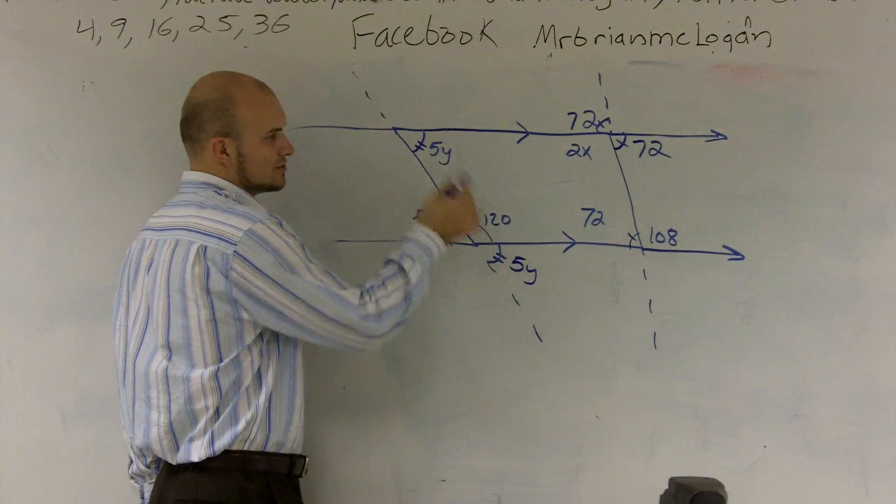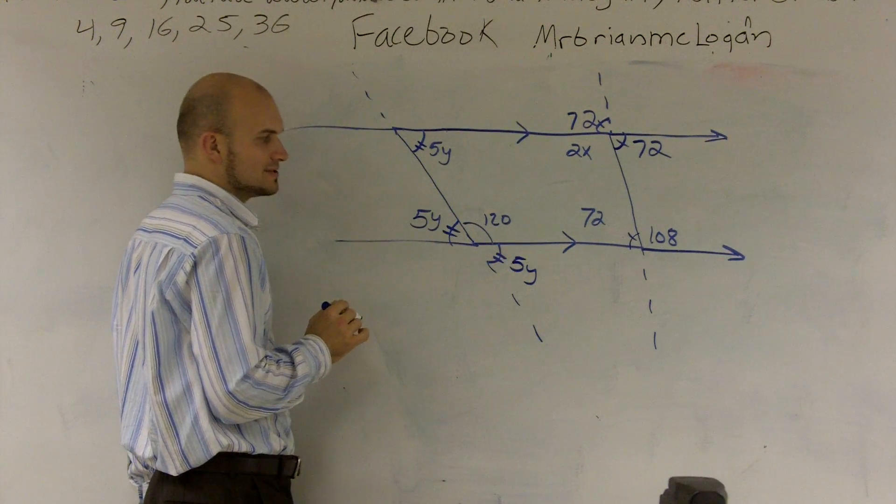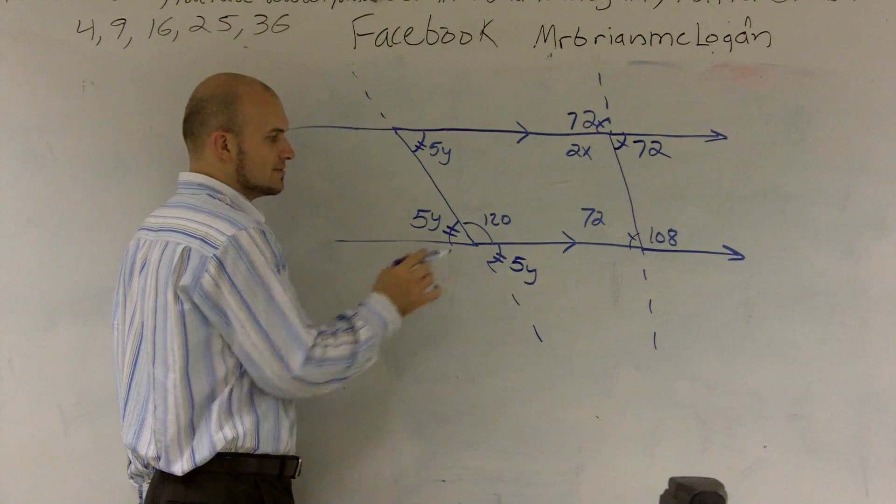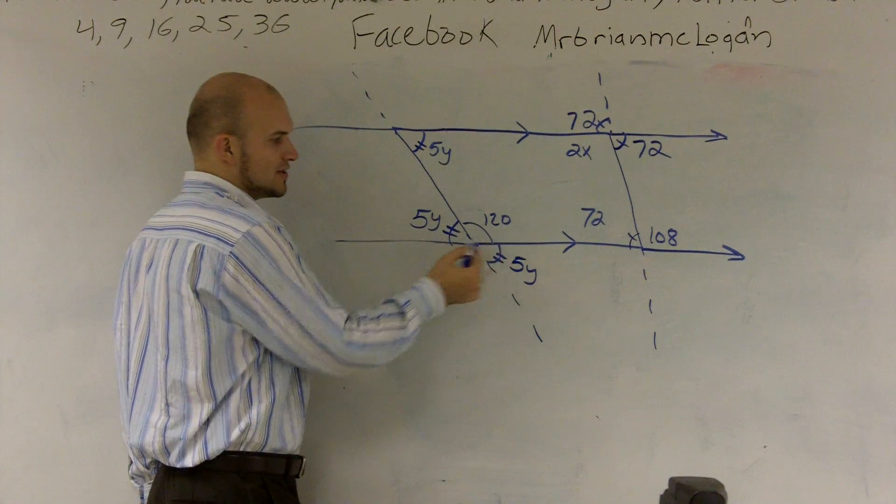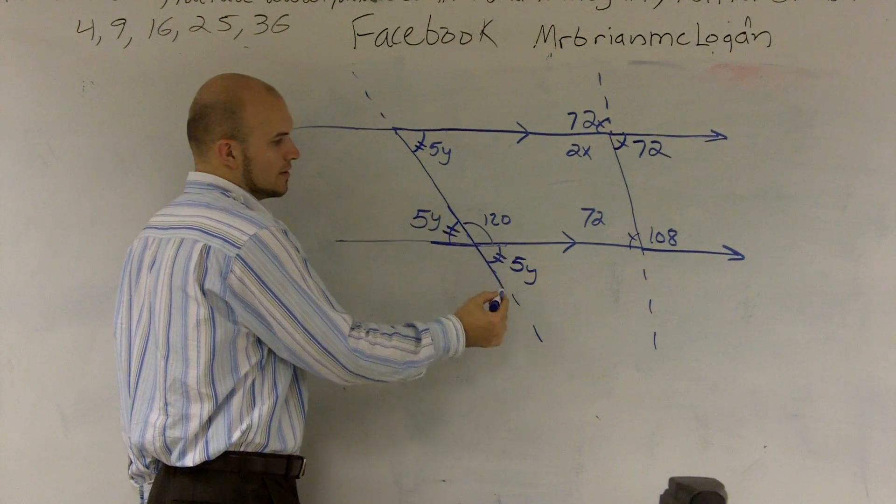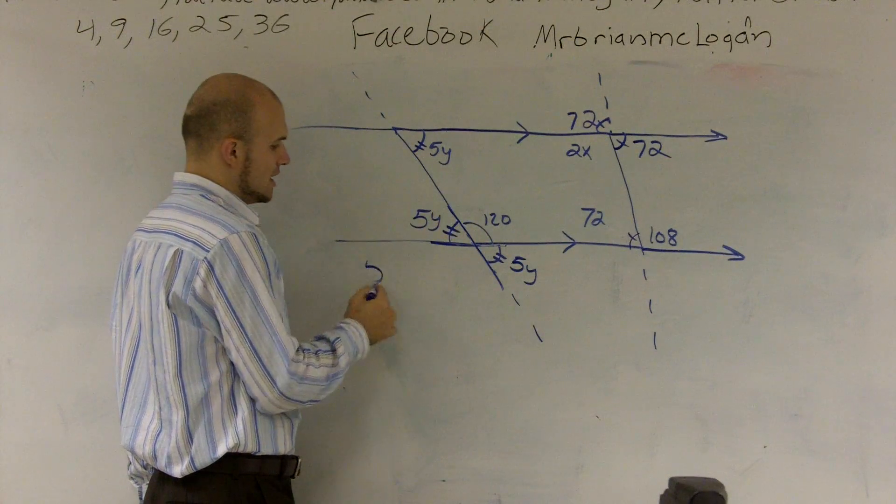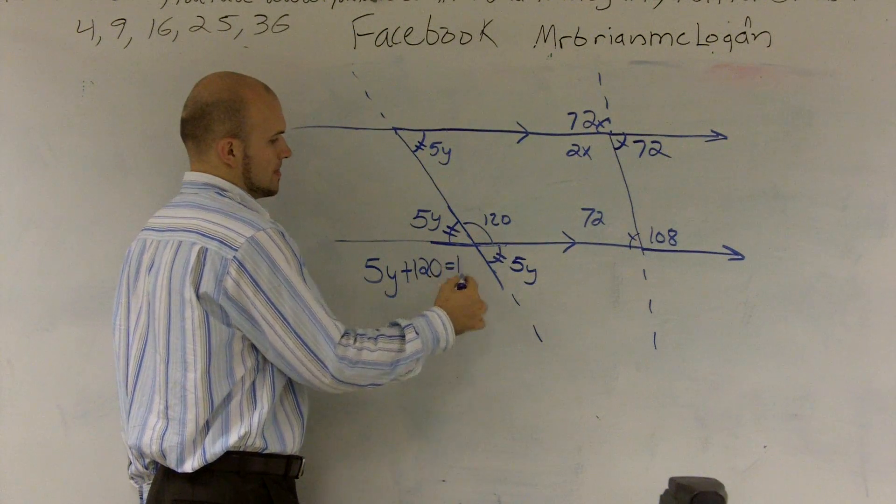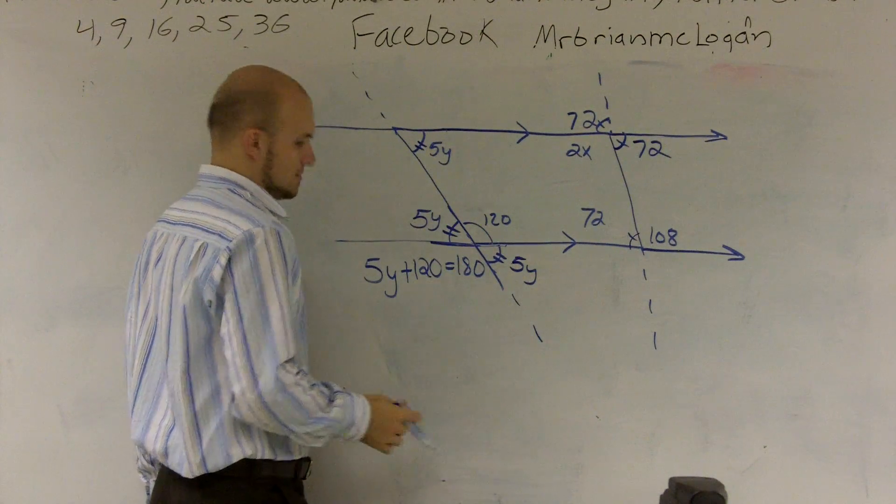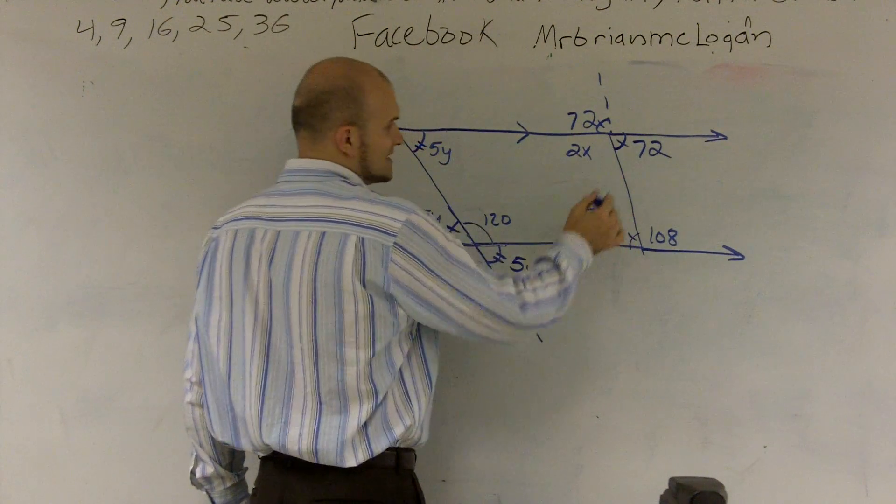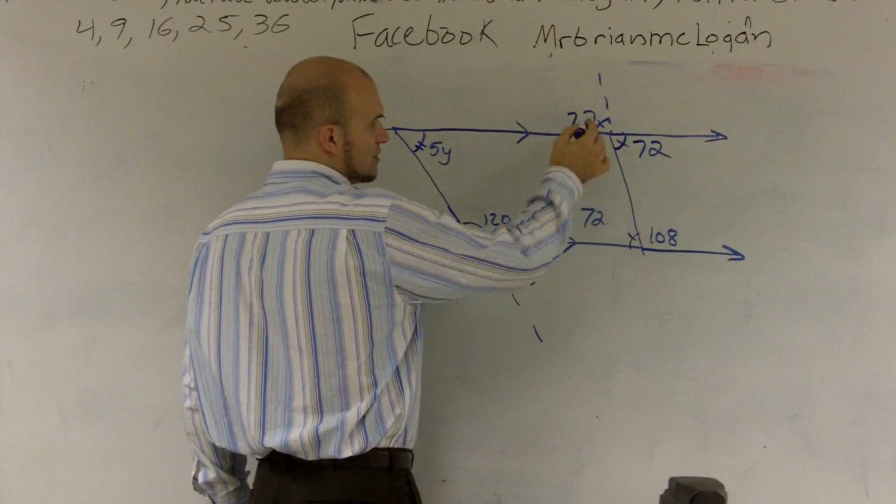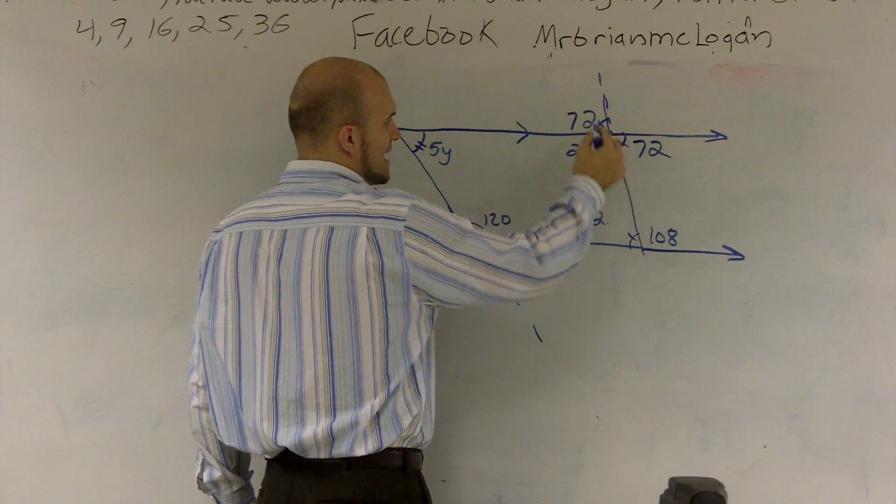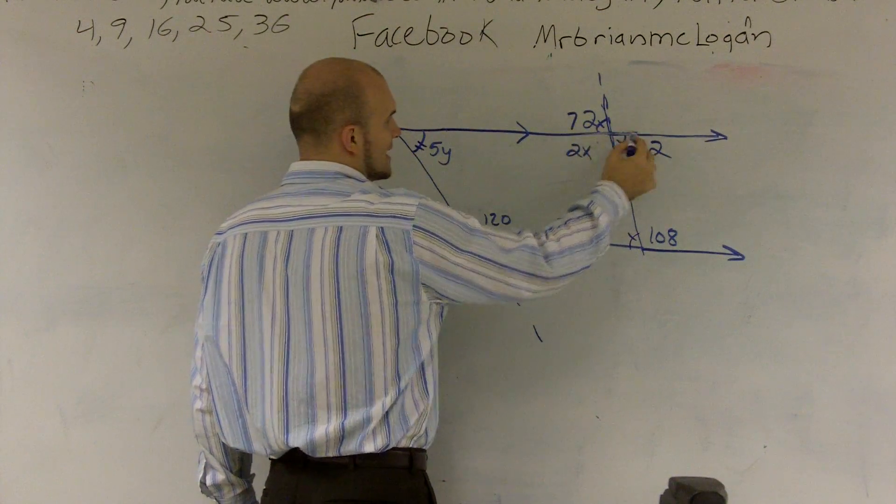We know that 5y and these two are equal to each other because they're alternate interior angles. We know that these two angles are equal to each other because they're corresponding angles. But when you have two angles that make up a straight line, those two angles add up to 180. Same thing over here. These two are alternate interior. These two are corresponding. Whenever two angles add up to make a straight line, you can say 2x plus 72 equals 180.